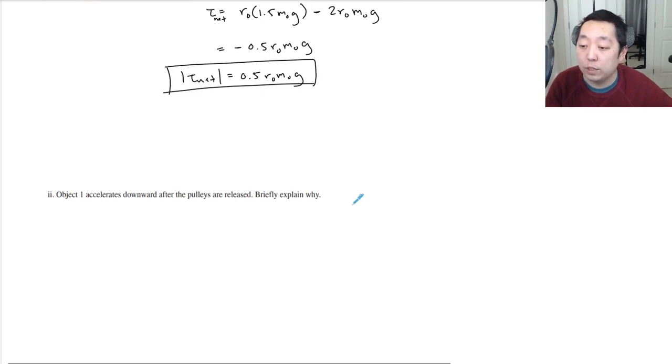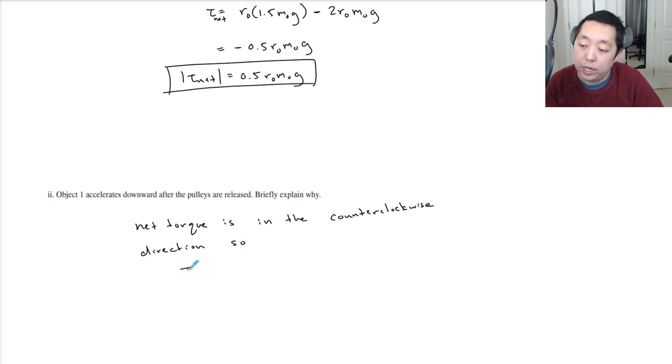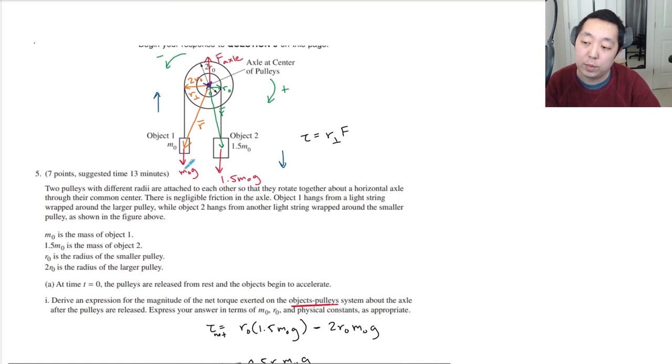Object 1 accelerates downward after the pulleys are released. Briefly explain why. So, the net torque is in the counterclockwise direction. Net torque, which equals I alpha, means that the angular acceleration is counterclockwise. Object 1 falling is the counterclockwise motion, right? So, if I'm saying, if this thing is going to go counterclockwise, then that means M0 is going down, right?